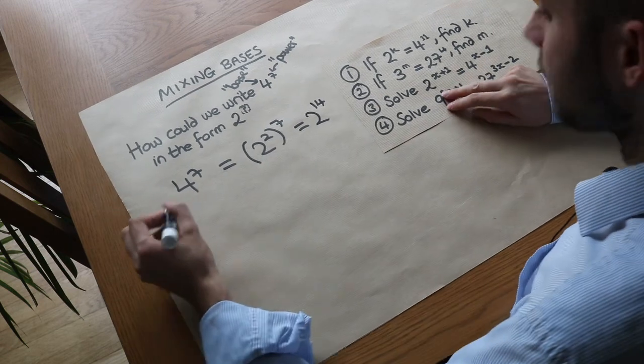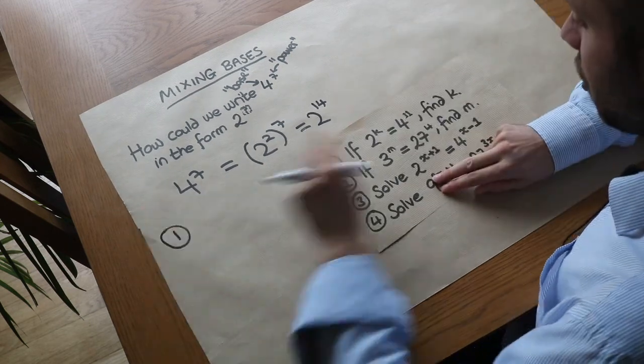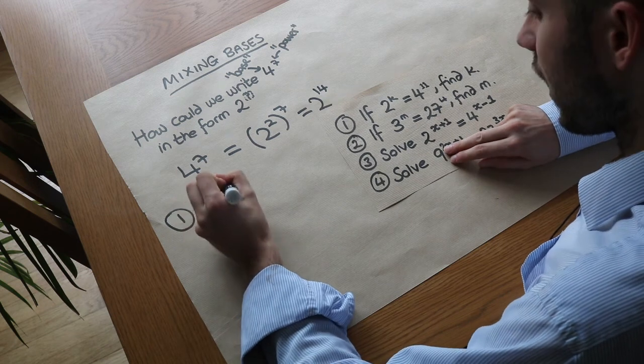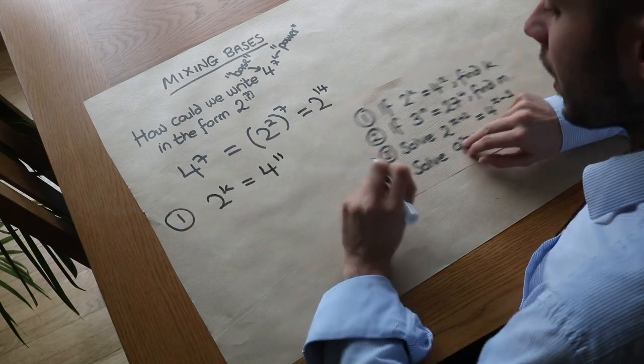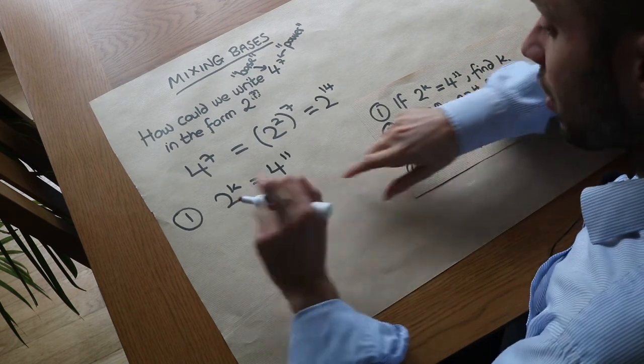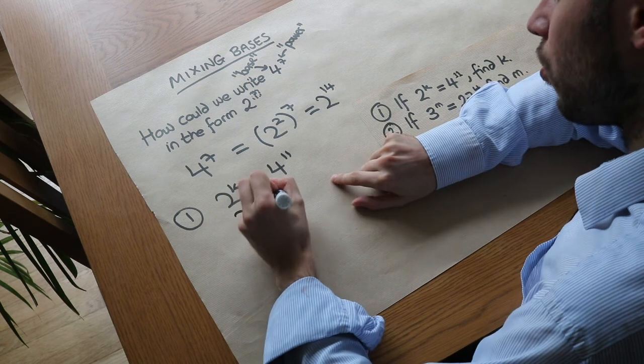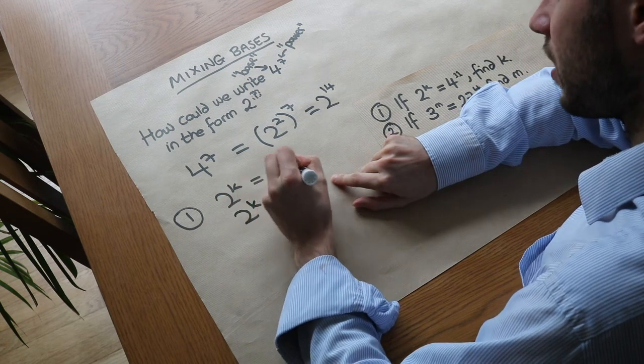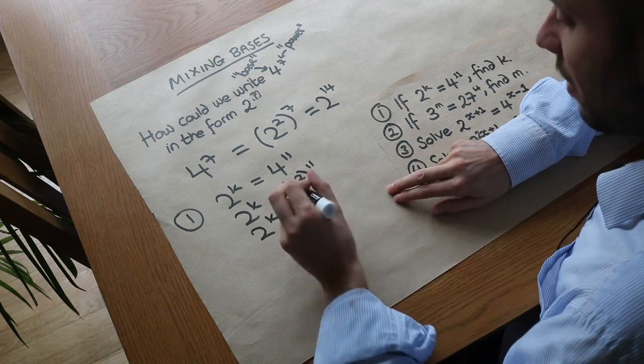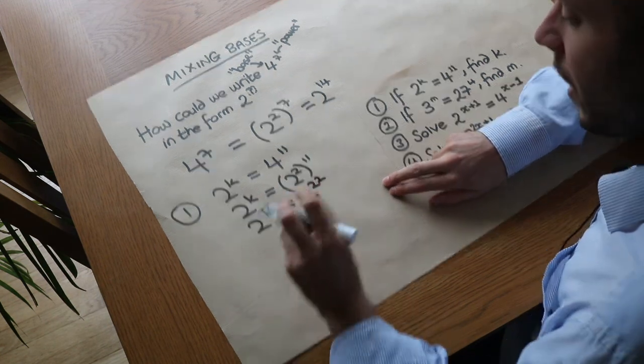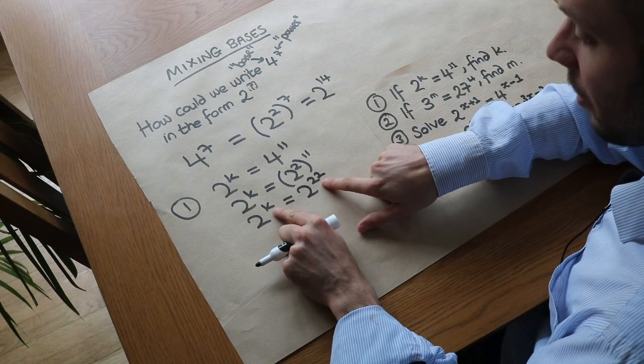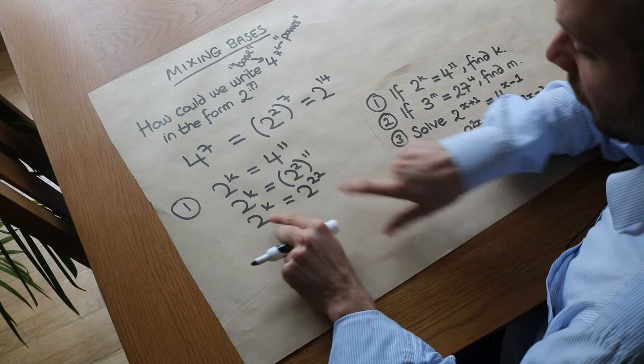Let's use that to solve these questions. The first one: if 2 to the k is 4 to 11, find k. We've got 2^k = 4^11. Now 4 is a power of 2, so we replace the 4 with (2 squared) to the power of 11. We multiply the powers together to get 2^22. Because the bases are the same, we can equate the powers, so k is 22.